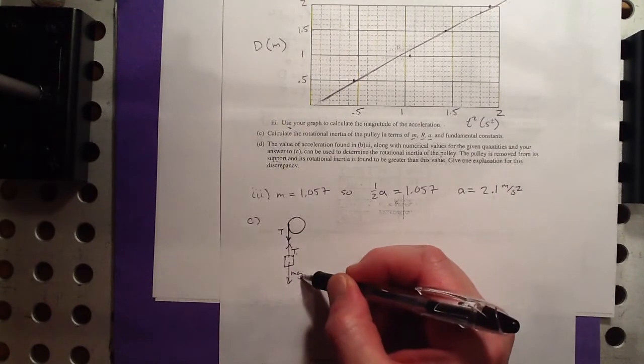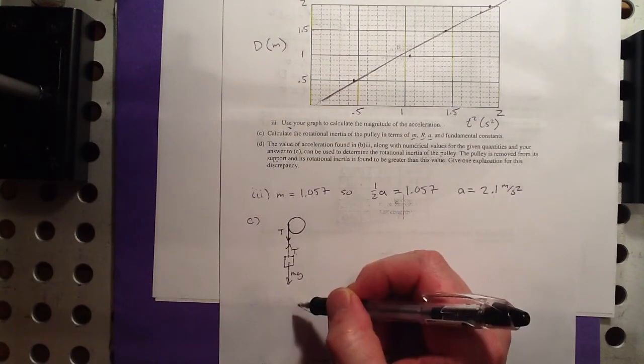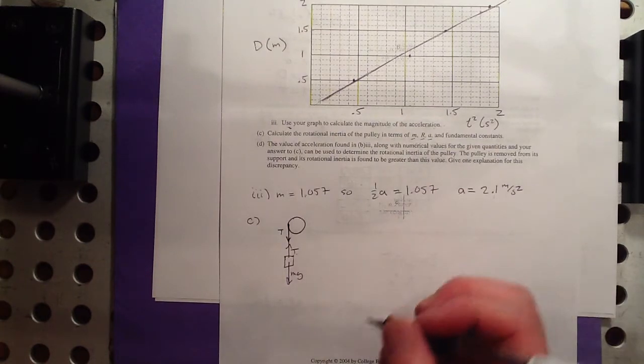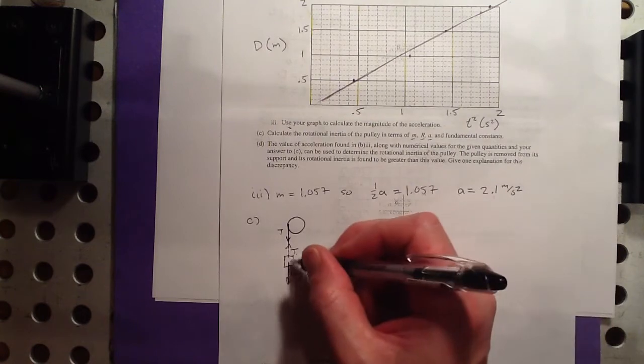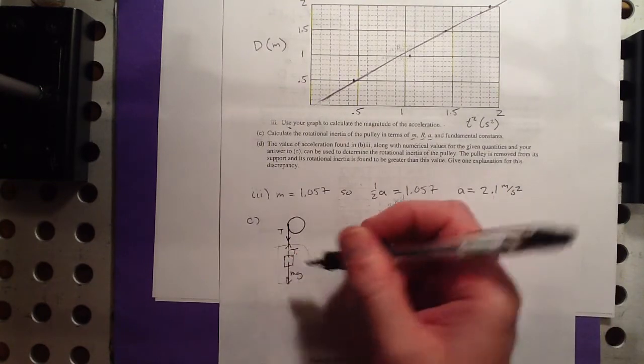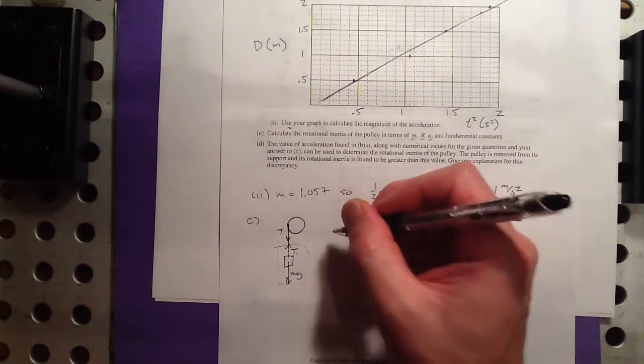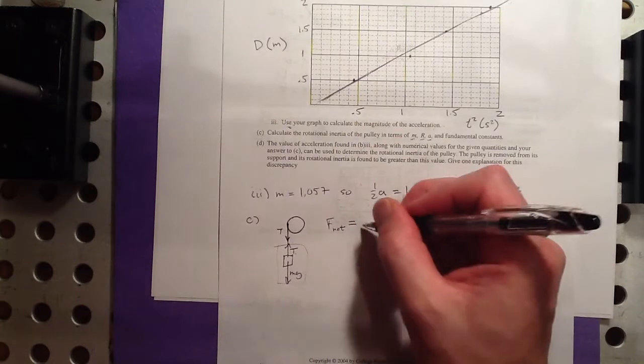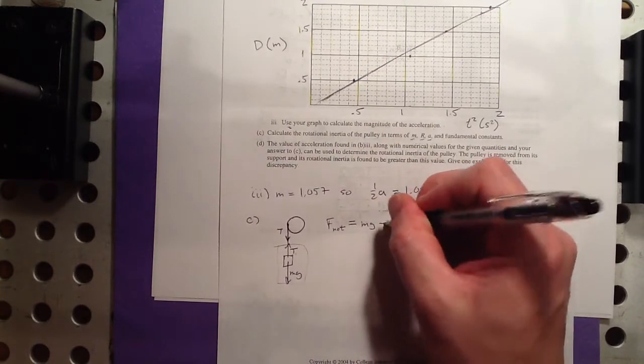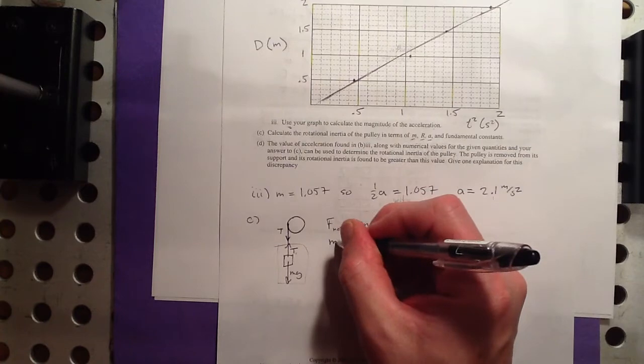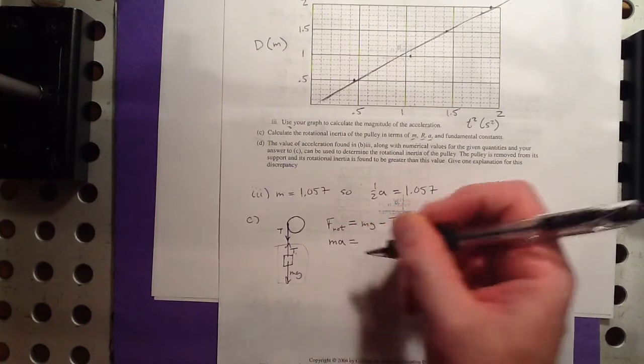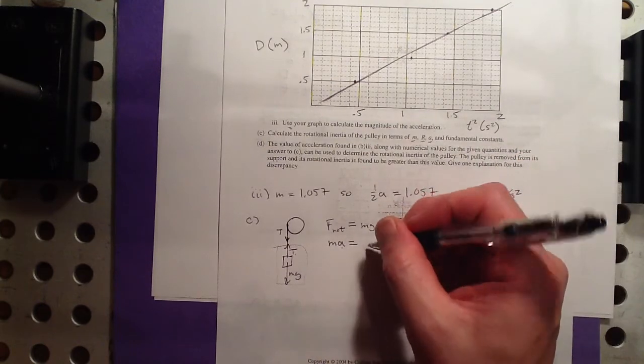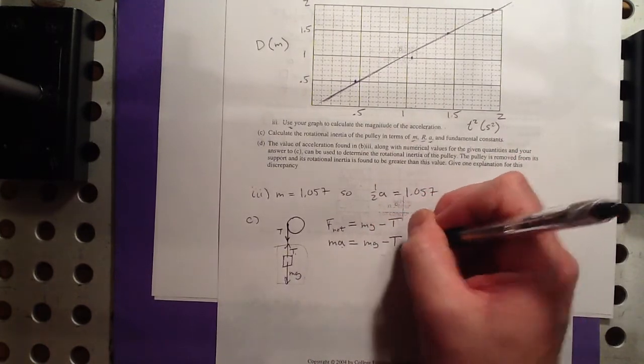Now, these two are not equal, otherwise the block would never have started moving in the first place, or if it were moving, it would be going at a constant velocity. So, these are the things that we need to recognize here. From the block, we get one equation, which is net force on the block is equal to Mg minus T, and force is equal to mass times acceleration, and we're allowed to use that, right? We actually know what it is from the last part. Okay, that gives us one equation.